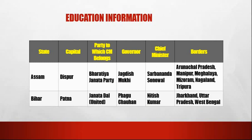The third state is Assam. The capital of Assam is Dispur. The party to which the CM belongs is Bharatiya Janata Party. The governor is Jagdish Mukhi. The chief minister is Sarbananda Sonowal. The borders are Arunachal Pradesh, Manipur, Meghalaya, Mizoram, Nagaland and Tripura.